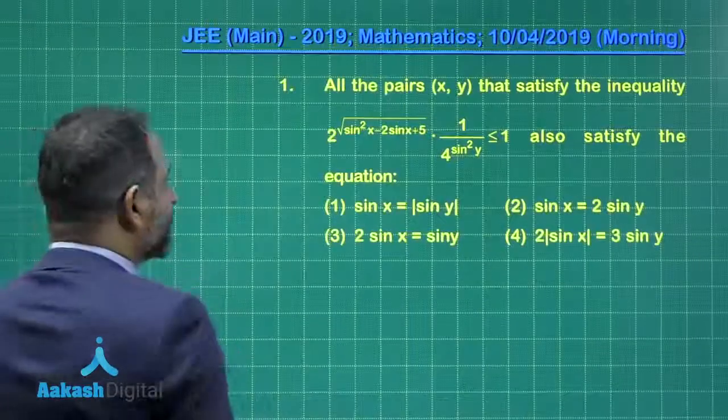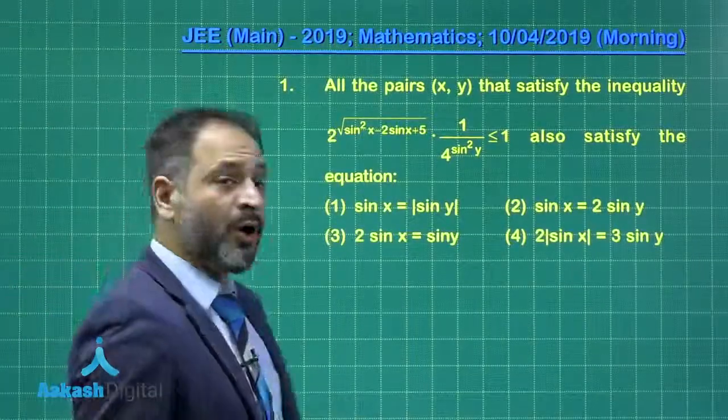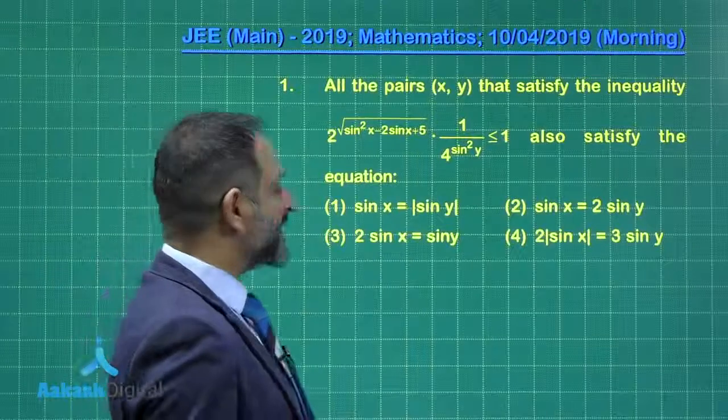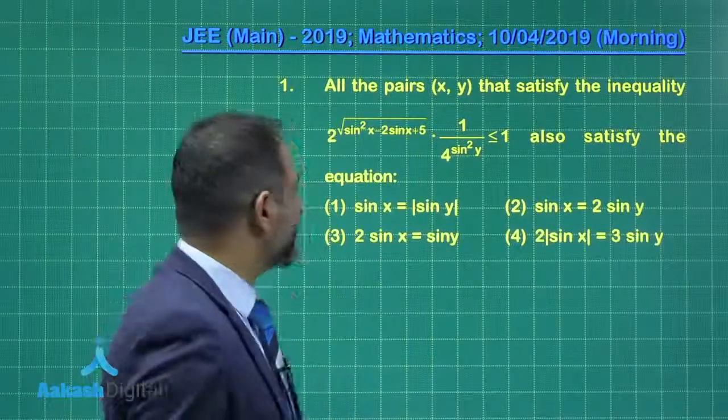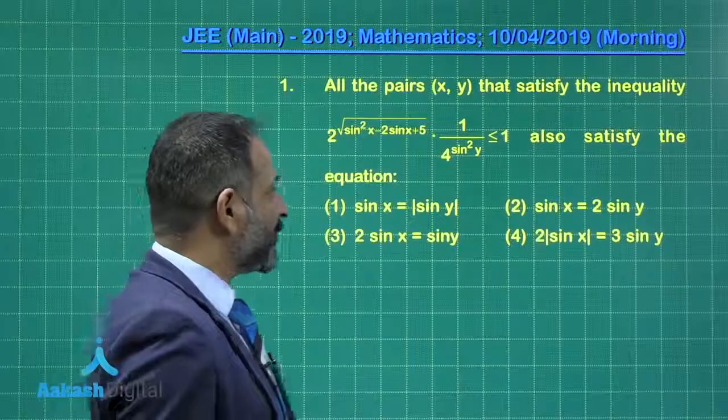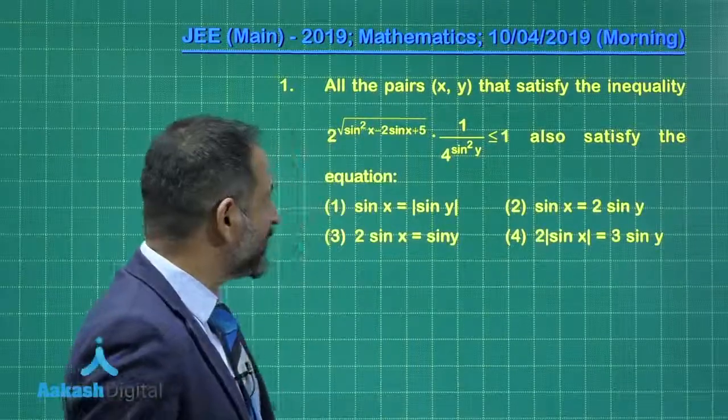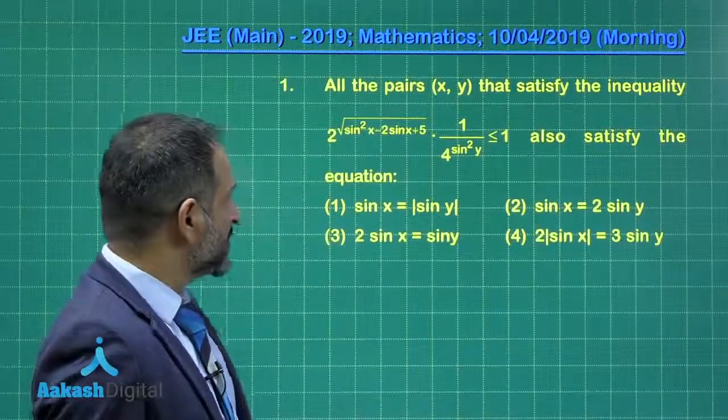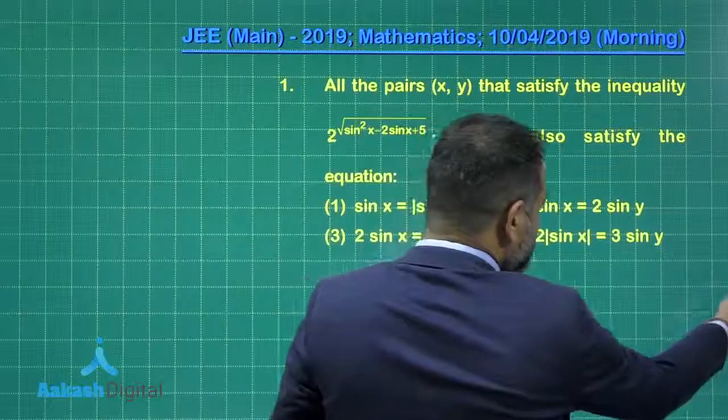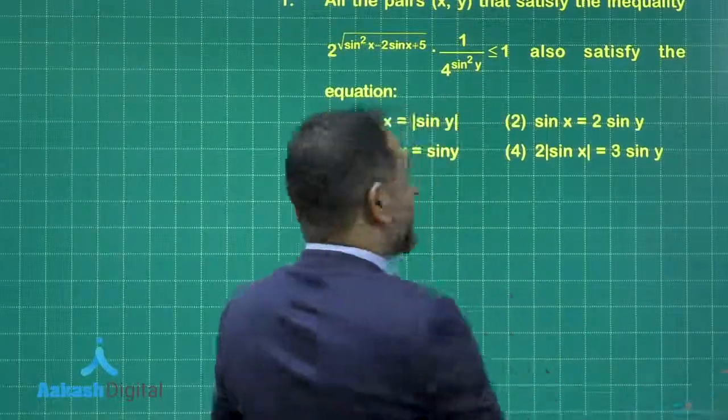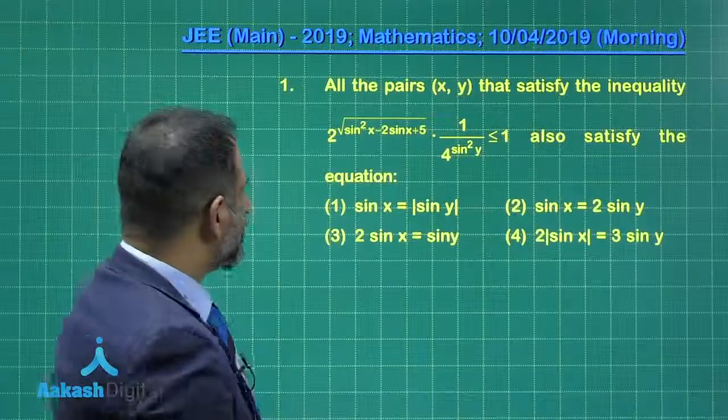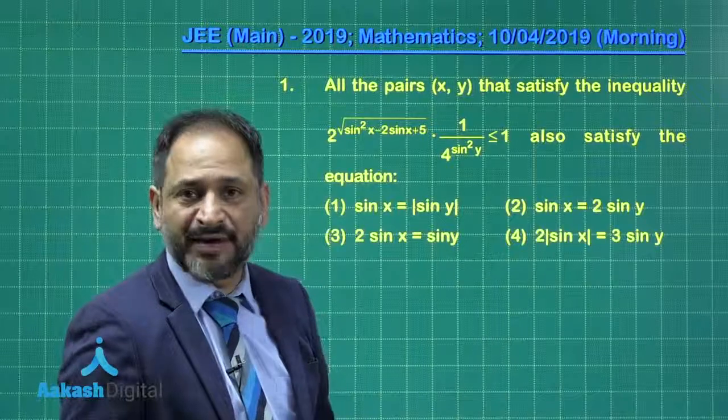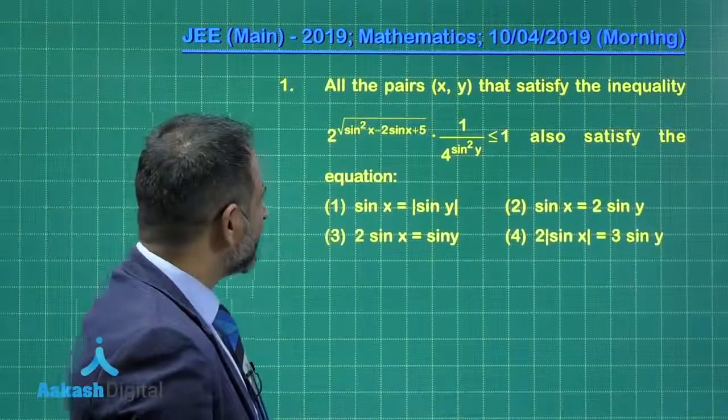Let us move on to the first question. It says that all the pairs that satisfy the inequality 2 raised to the power under root sin squared x minus 2 sin x plus 5 into 1 upon 4 raised to the power sin squared y is less than 1 also satisfy which of the following options. The question is related to trigonometry as well as inequality. The left hand side is carrying two variables, one is x and another is y, and there is an inequality sign.